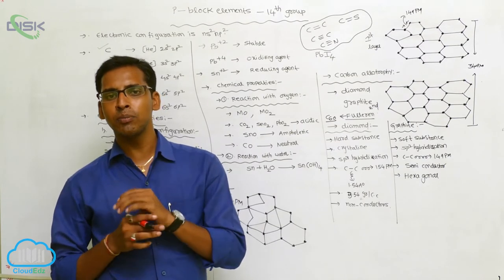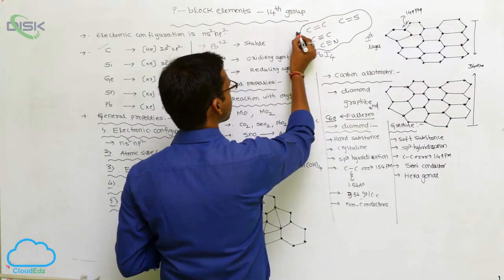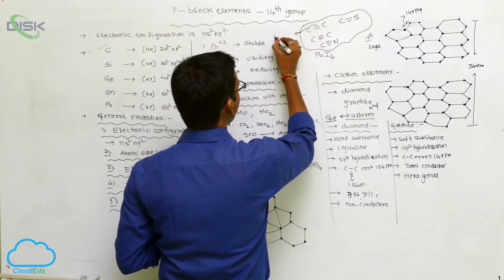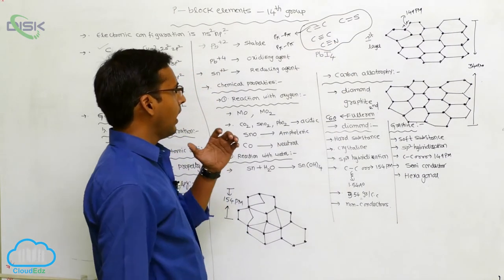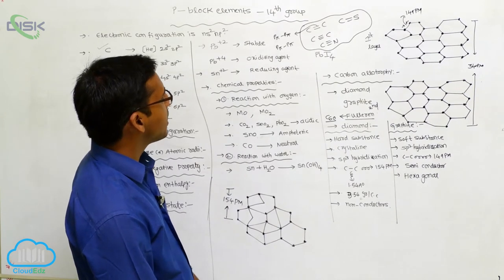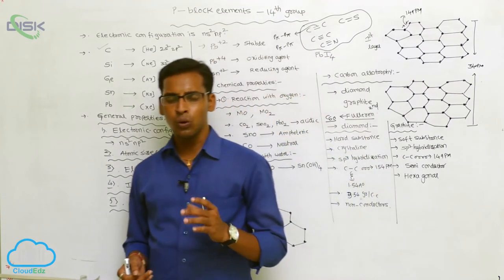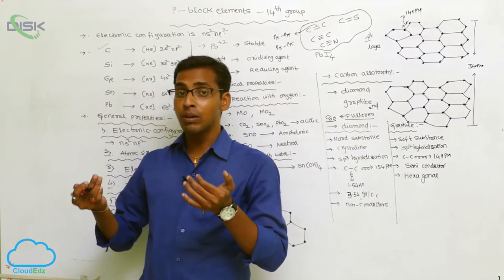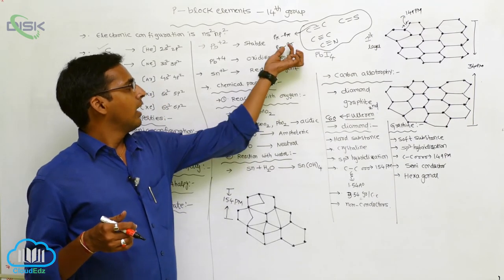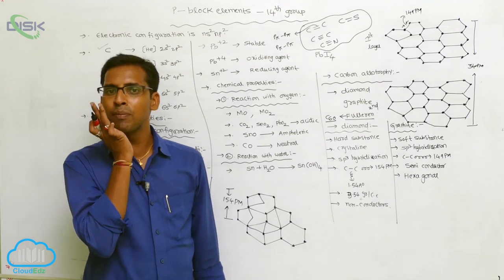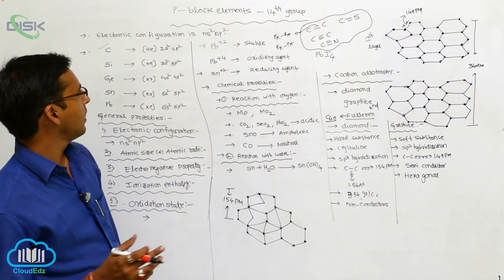Only carbon forms double bonds or triple bonds among the Group 4A elements. The remaining elements do not exhibit this nature because double bond formation is due to pπ-pπ bonding. In carbon, only S and P orbitals are present, whereas in remaining elements, D orbitals or D electrons are available. Due to the presence of D and F electrons, no double or triple bonds form — only sigma bonds — making this a special character of carbon.